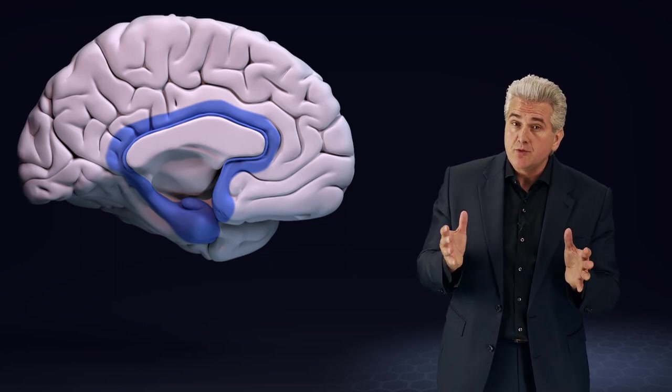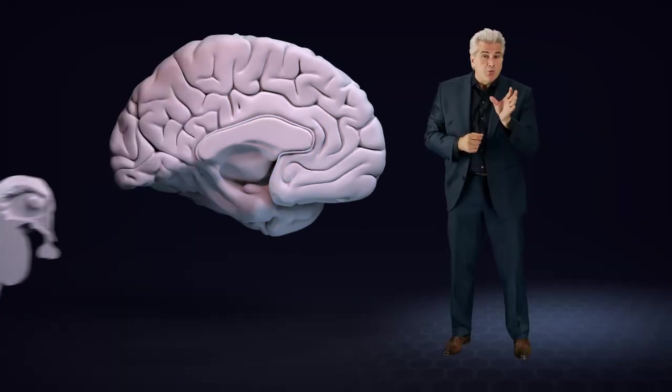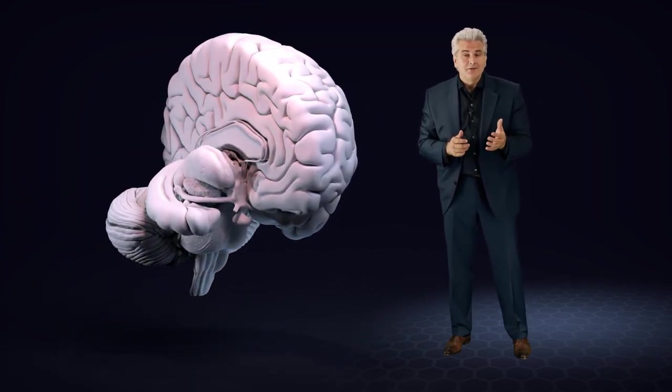The allocortex shown here is the core of the so-named cortical part of the limbic system. The insula also has allocortical parts. We want to take a look at another two important areas of the allocortex, the amygdala and the hippocampus.